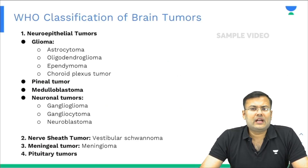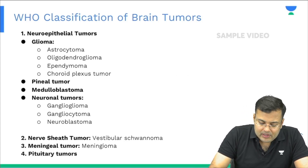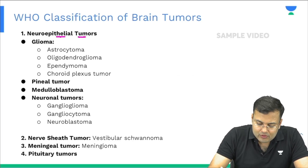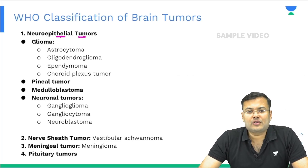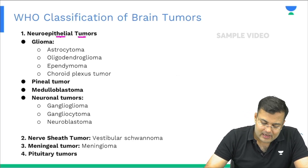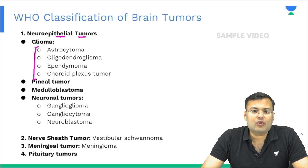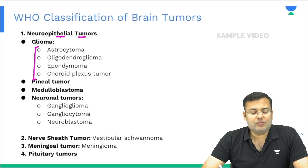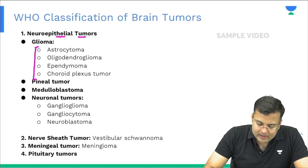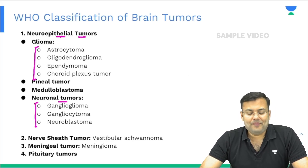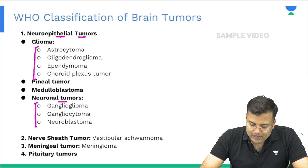Now, the WHO classification of brain tumor. First: neuroepithelial tumor, further divided into glioma (which includes astrocytoma, oligodendroglioma, ependymoma, and choroid plexus tumor), pineal tumor, medulloblastoma, and neuronal tumor (which includes ganglioglioma, gangliocytoma, and neuroblastoma).